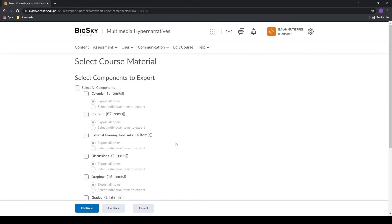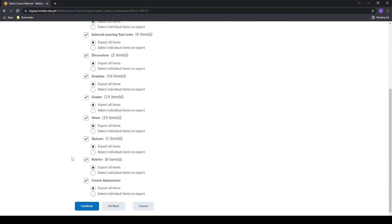In the Select Course Material page, you can select what course components you want to export. For this demonstration, we'll select all components and click Continue below.